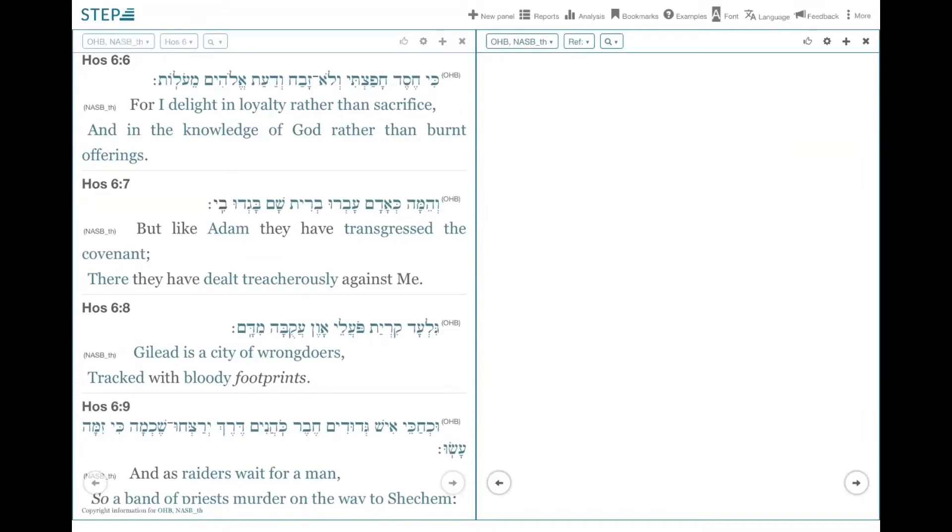Verse 6 is very important for us to pay attention to. Verse 6 describes God's desire. He says, For I delight in loyalty rather than sacrifice, in the knowledge of God rather than burnt offerings.